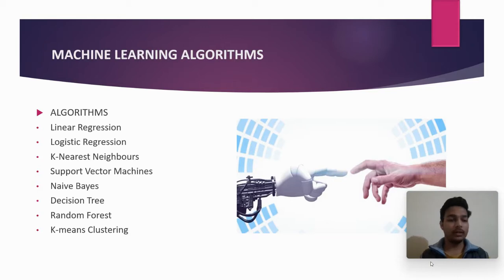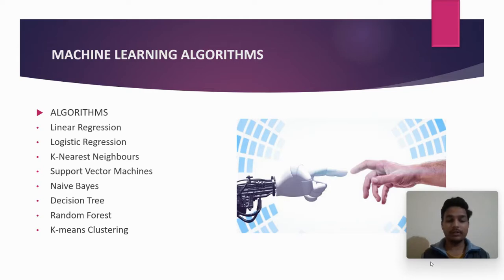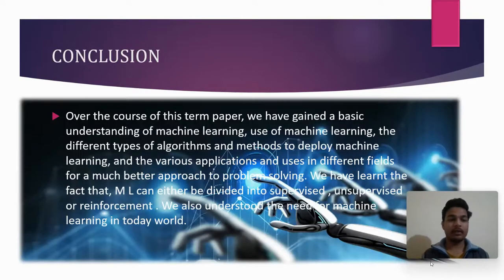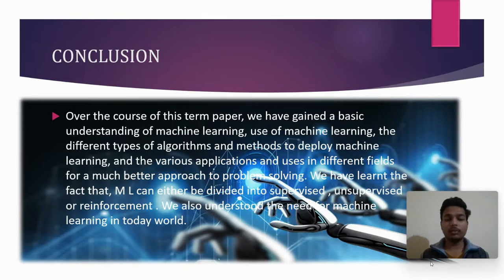Some algorithms we also use in machine learning include: linear regression, logistic regression, k-nearest neighbors, support vector machine, Naive Bayes, decision tree, random forest, and k-means clustering.